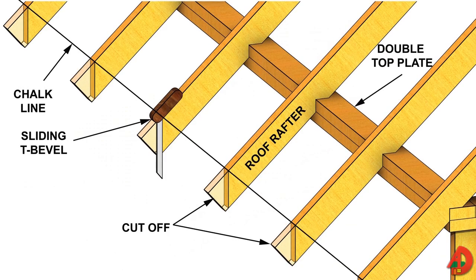Common rafter overhang can be pre-cut before the rafters are installed, but some carpenters prefer to do it after the rafters are fastened to the ridge board and wall plates. A chalk line is used to mark the overhang on the rafters and a sliding T-bevel is used to mark a plumb cut; the cuts are then made using a circular saw. This method ensures that the line of the overhang is straight even if the building is not.